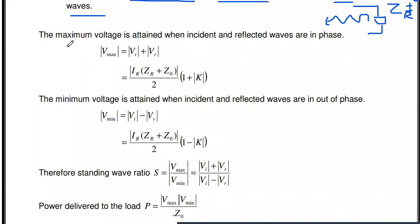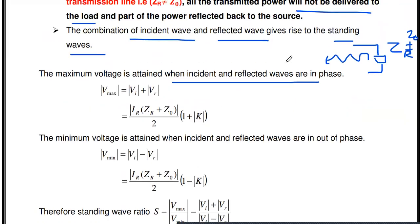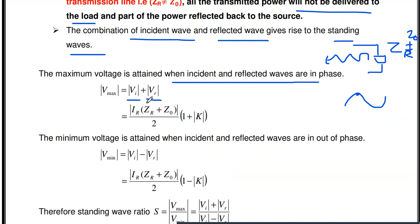The maximum voltage occurs when the incident and reflected waves are in phase. The maximum value of voltage in a standing wave system, V max, is attained whenever the incident wave and the reflected wave are in phase. Since the two waves are in phase, they are added together. V max equals the incident voltage plus the reflected voltage: |V max| = I_R(Z_R + Z_0)/2 × (1 + |K|).